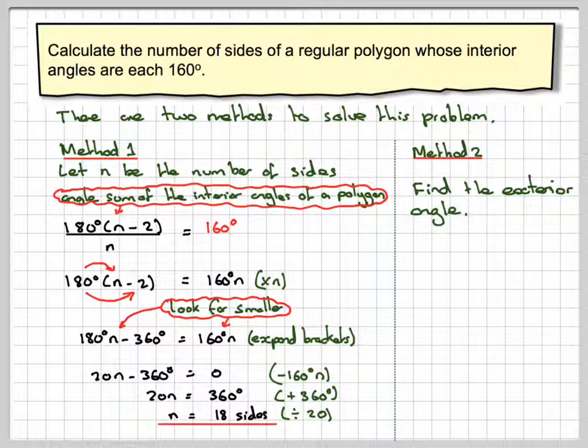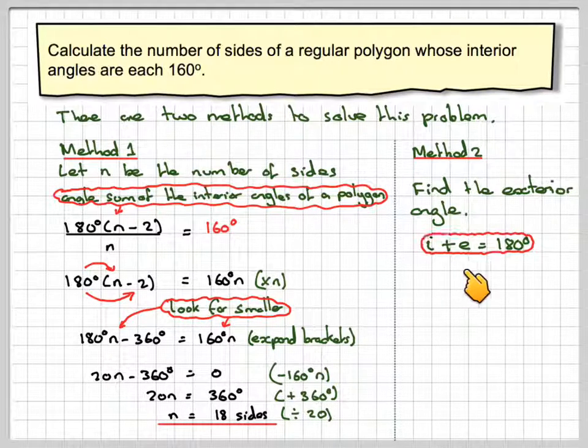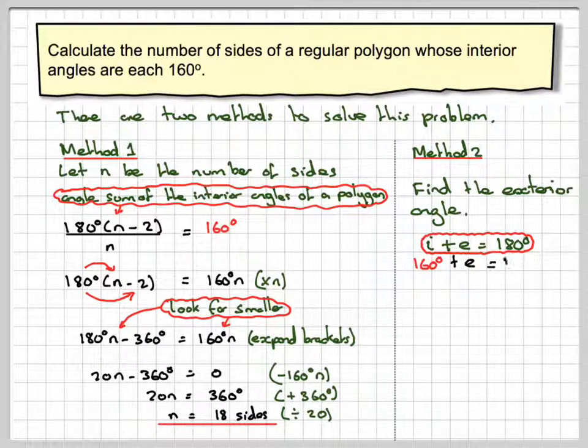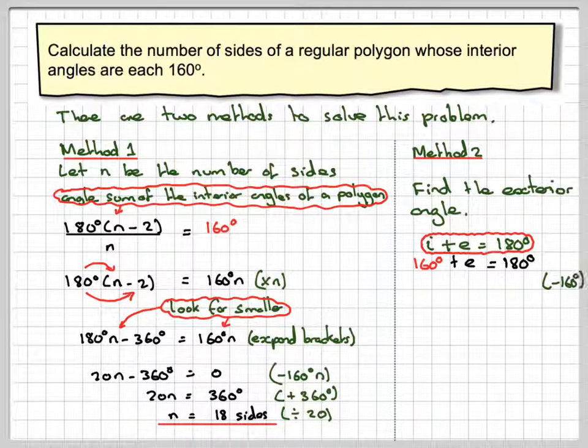Find the exterior angle. And we know for any polygon that i plus e is equal to 180. So i is 160 plus e is equal to 180. Taking away 160, that's going to give that the exterior angle is 20 degrees.